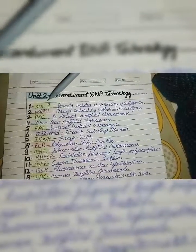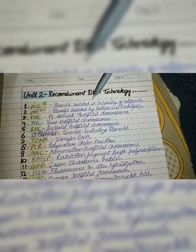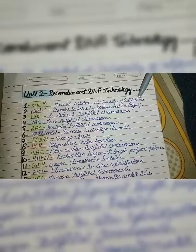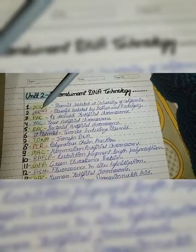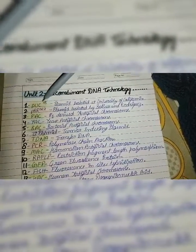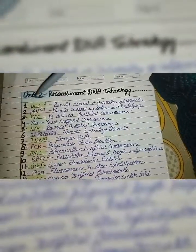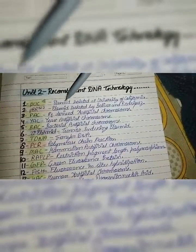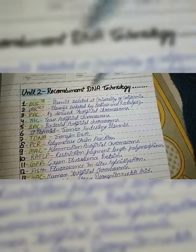PAC-18 stands for Plasmid Isolated at University of California. PBR-322 are plasmids that are basically used for cloning. PBR-322 stands for Plasmid Isolated by Bolivar and Rodriguez.